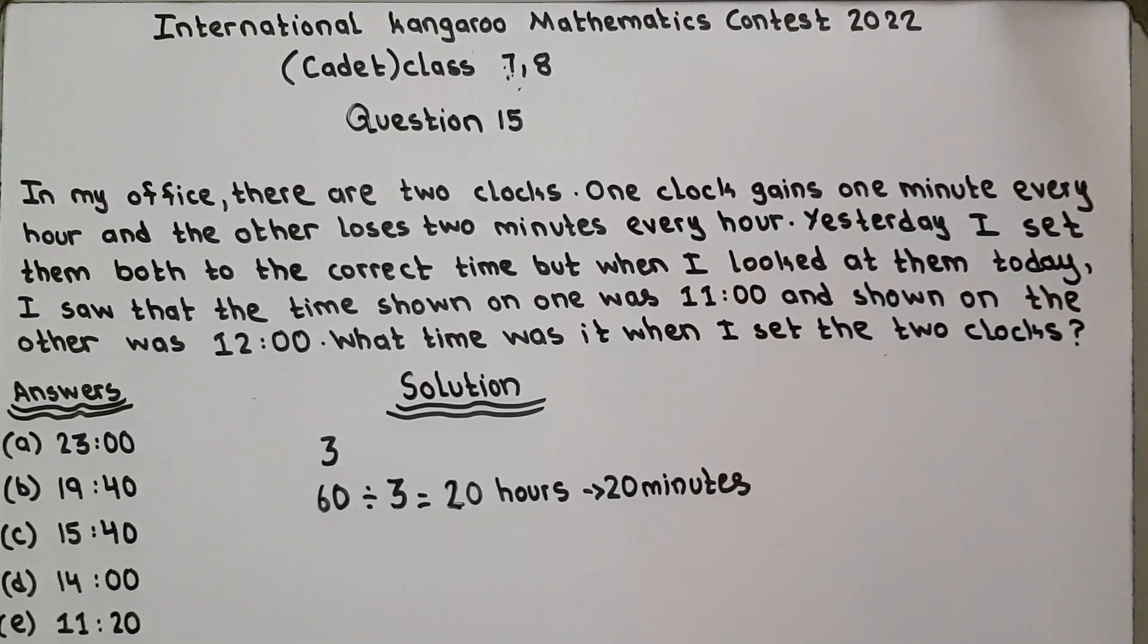In 20 hours the clock will gain 20 minutes because it gains one minute every hour. Now we will find when the clocks were set.